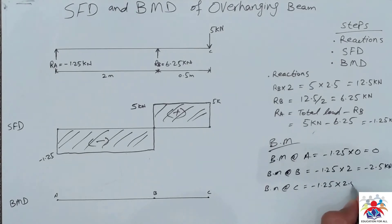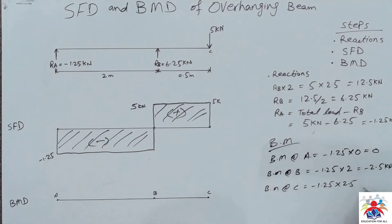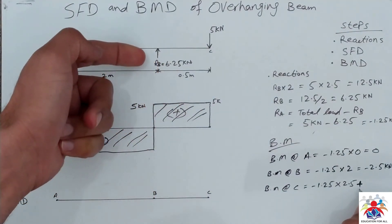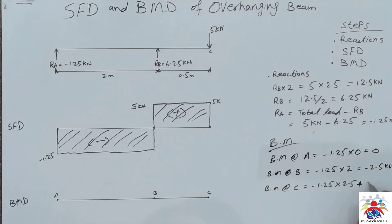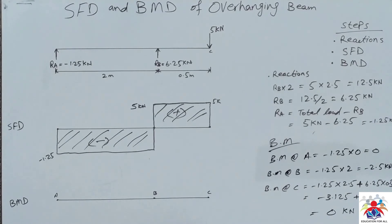Bending moment at point C: minus 1.25 multiplied by 2.5, because the distance from A to C is 2.5, plus 6.25 (which is positive as it acts upward) multiplied by 0.5. The result is minus 3.125 plus 3.125, which gives zero kilo-newton at C. So based on these values — zero at A, minus 2.5 at B, and zero at C — we can draw the bending moment diagram.